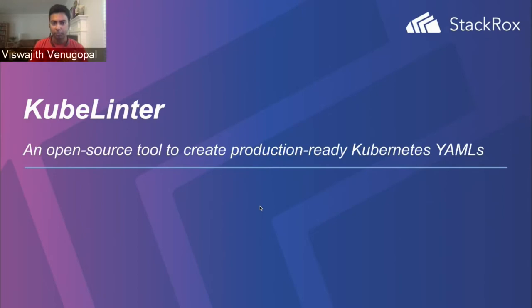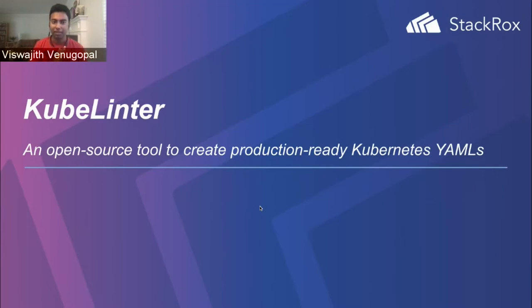You're going to see the name StackRocks around today's presentation because the name isn't going away. The GitHub that KubeLinter is hosted on is still under StackRocks, and the future community we're building around the Red Hat Advanced Cluster Security product is all going to be named StackRocks. So that's some context in case you get confused by the naming.